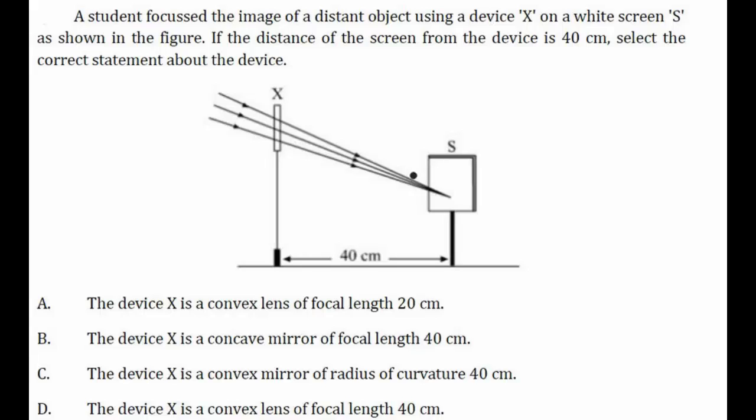That means parallel rays from a distant object get converged to the second principal focus of the convex lens. So here this device X is our convex lens, and since the distance between the screen and the device is 40 centimeters, you can say that the focus of the lens is 40 centimeters.